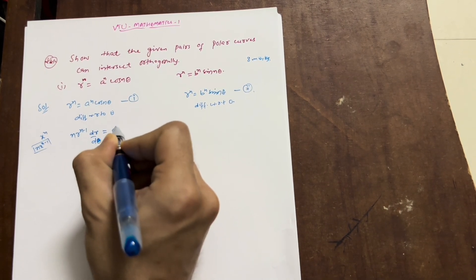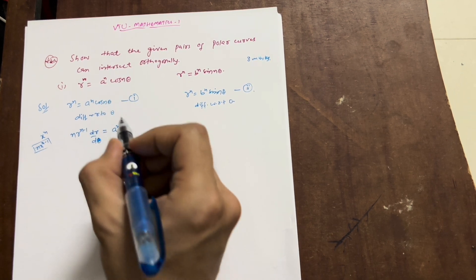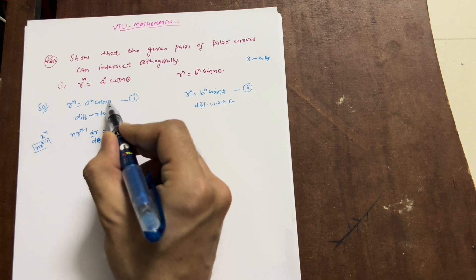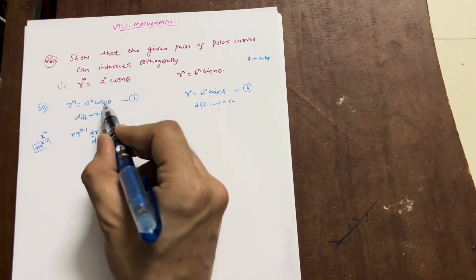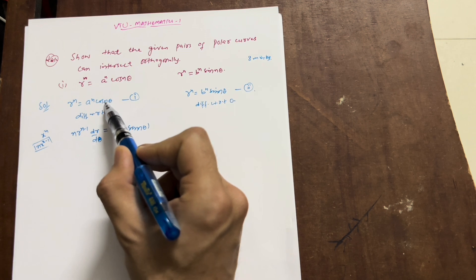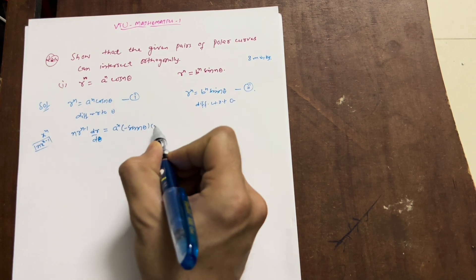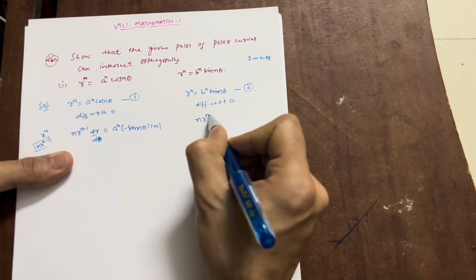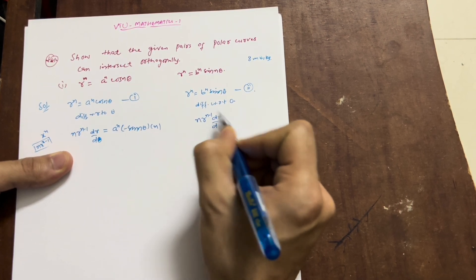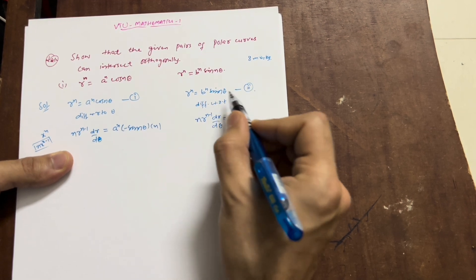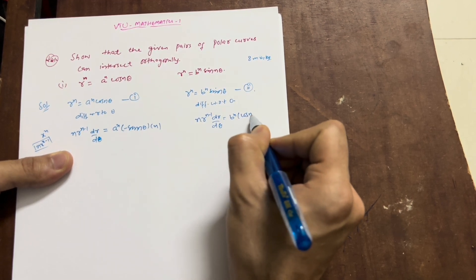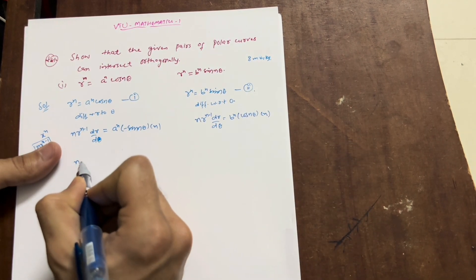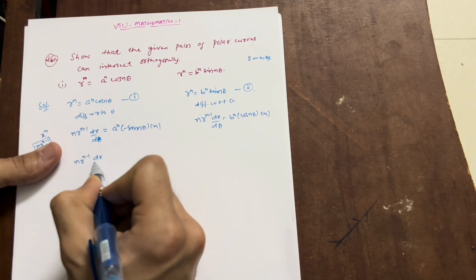For the first curve r^n = a^n cos(nθ): differentiating, n·r^(n−1)·dr/dθ = a^n · (−sin(nθ)) · n, since the internal differentiation of nθ with respect to θ gives n. For the second curve r^n = b^n sin(nθ): n·r^(n−1)·dr/dθ = b^n · cos(nθ) · n.